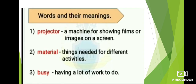Now we will see some meanings of the words. See the first one — projector. What is the meaning of projector? A machine for showing films or images on a screen. Now what is the second one? Material. What is the meaning of material? Things needed for different activities. And what is the third one? Busy. What is the meaning of busy? Having a lot of work to do. So I hope you must have understood the meanings also.